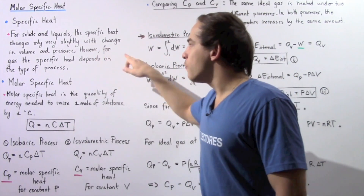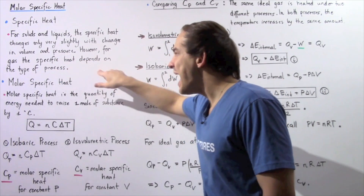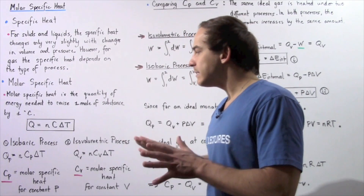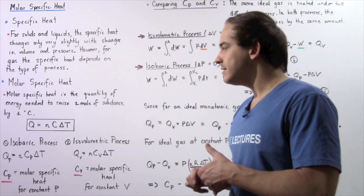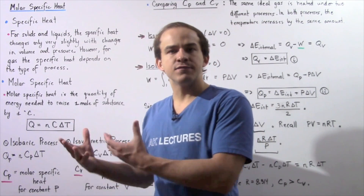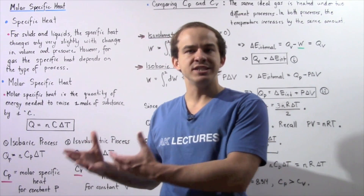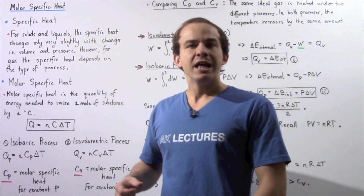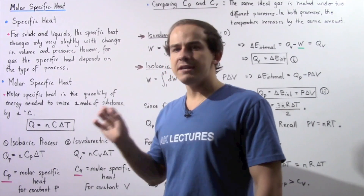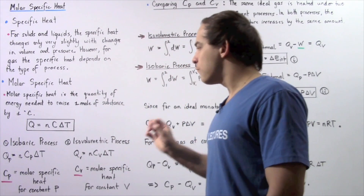We just said that for gases, the specific heat depends on the type of process. So what that basically means is if we have two different processes for the same gas undergoing the same change in temperature, the C values — the molar-specific heat values — will be different.